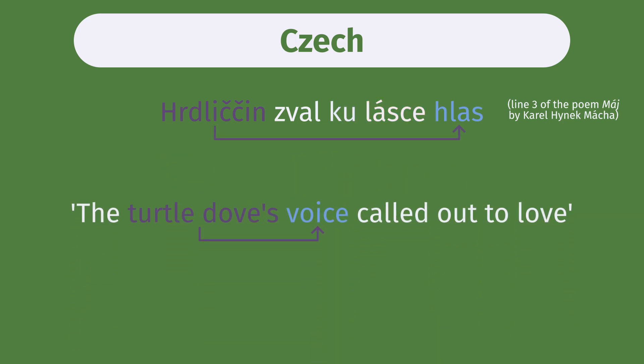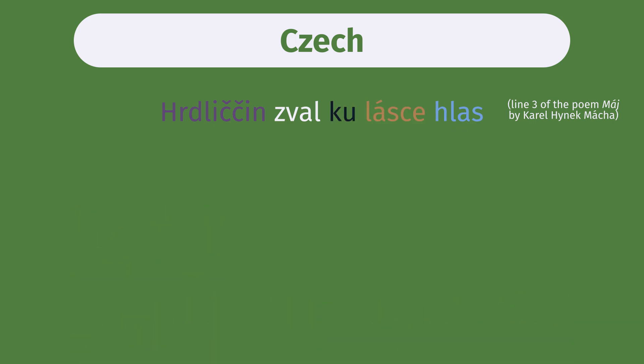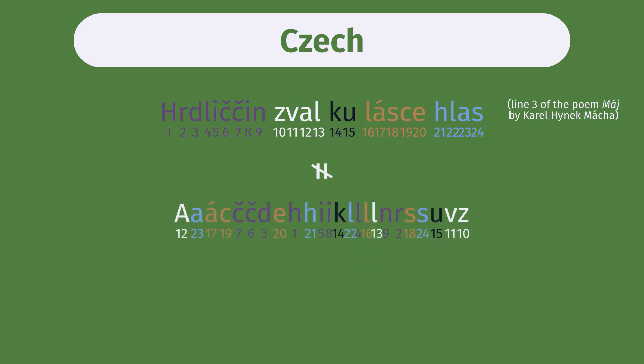For example, adjectives modifying a noun can be placed far away from the noun they modify in these two languages. But even in languages with the most flexible word orders, the order of phonemes — the distinct sounds in the language — is still relatively fixed within a word. You can't scramble the phonemes within a sentence however you like and still expect the sentence to be recognizable.